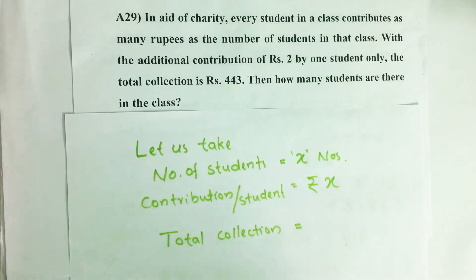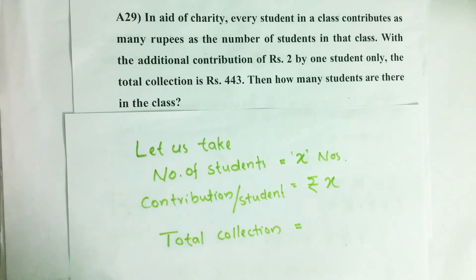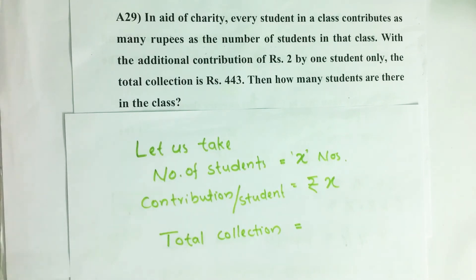Hello everyone. Here I am going to solve CSAT 2016 question number 29 from question paper series A. In aid of charity, every student in a class contributes as many rupees as the number of students in that class, with the additional contribution of rupees 2 by one student only. The total collection is rupees 443. How many students are there in the class?